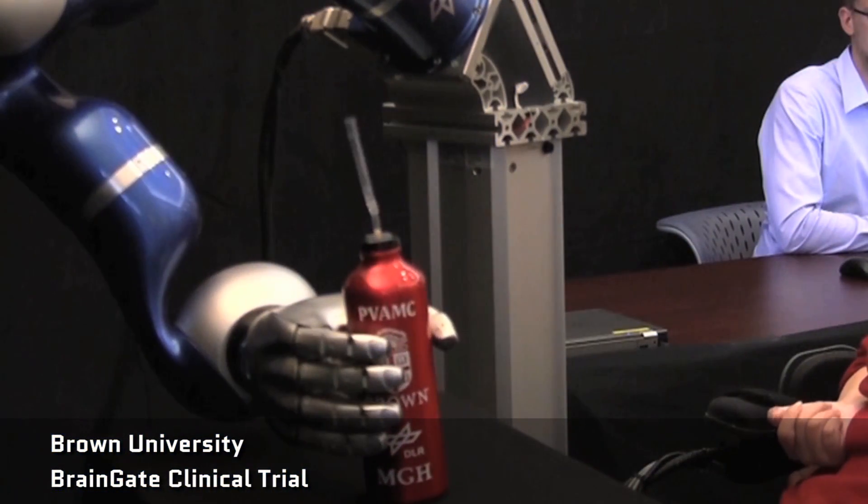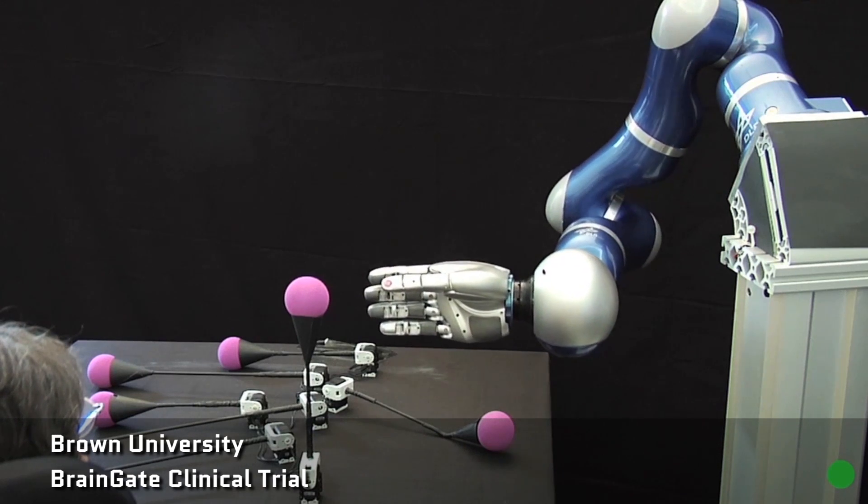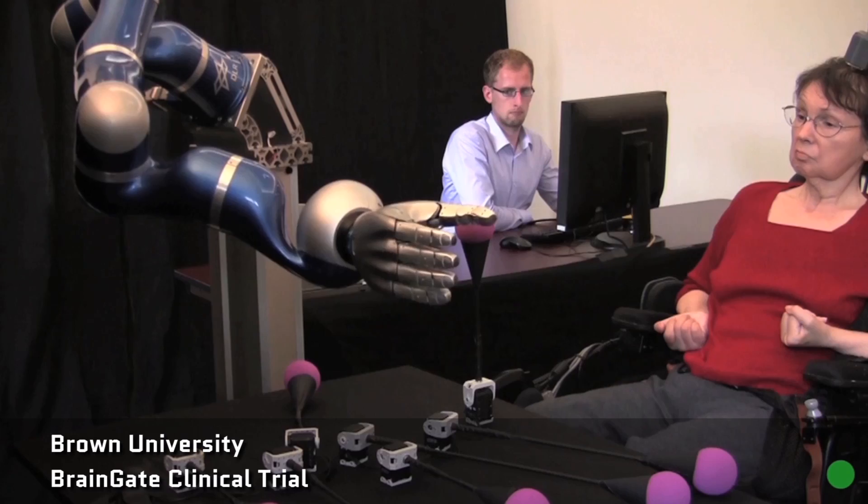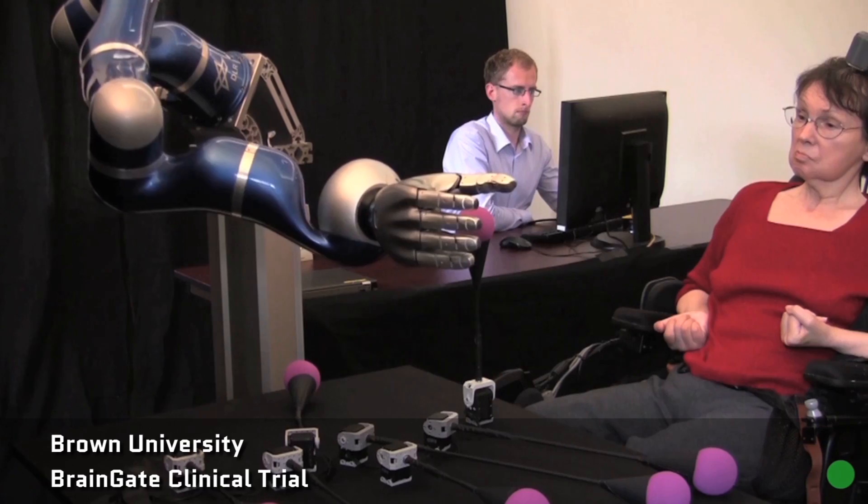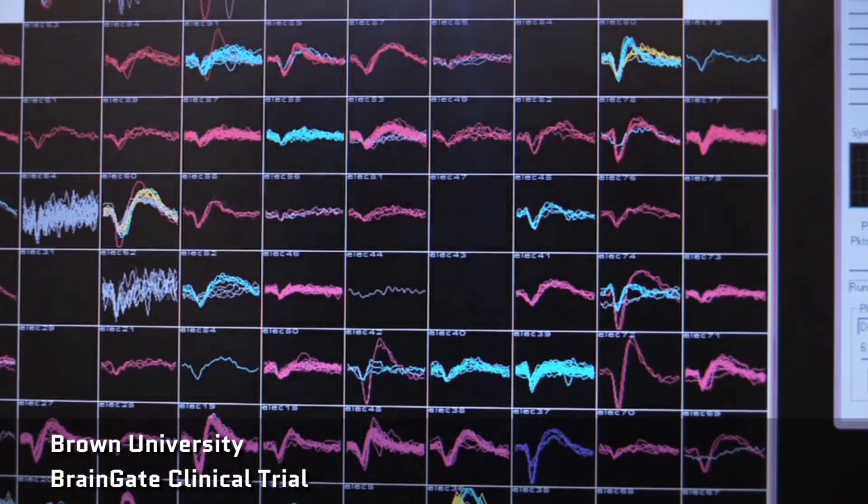We've talked about brain-computer interfaces before on this show, also known as BCIs. This is technology that has allowed animals and humans to control everything from a computer cursor to a robotic arm to an exoskeleton using some technology and their thoughts.